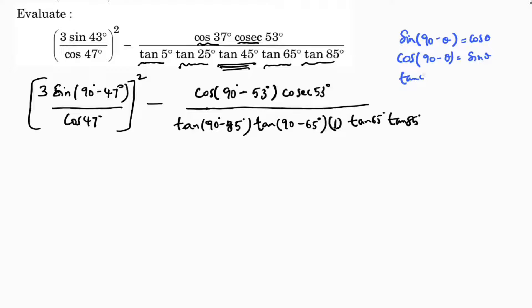Now here, 3 into sin 90 minus theta is cos theta, but here theta is 47. So 3 cos 47 by cos 47 whole square. Cos 90 minus theta is sin theta, so sin 53.